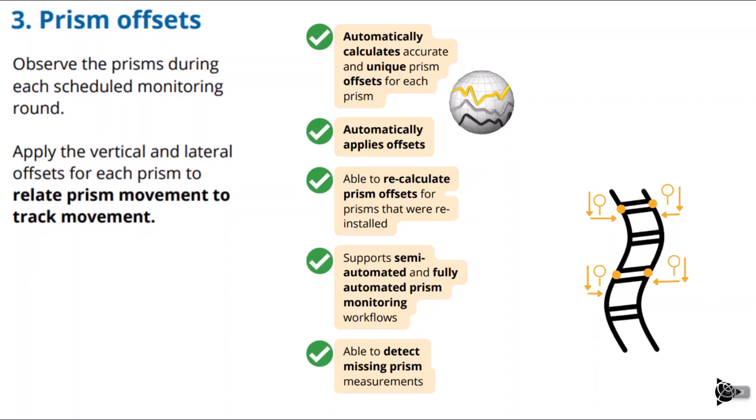T4D Rail supports both semi-automated and fully automated prism monitoring workflows. If you're measuring your targets through a fully automated total station, T4D Rail fully supports that. Or if you're using a semi-automated approach where you are physically on site to measure to your targets, T4D Rail still supports that workflow and you can still benefit. T4D Rail is also able to detect missing prism measurements — if something was obstructing a prism, or the target was destroyed, it can detect that a measurement is missing.